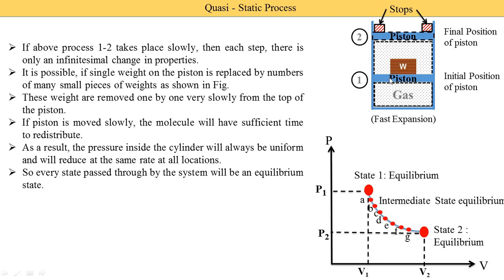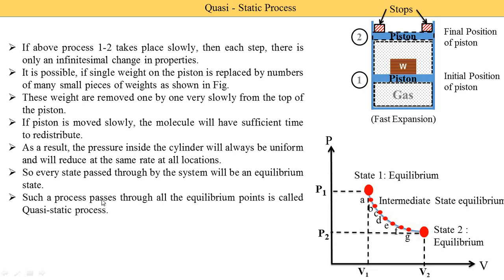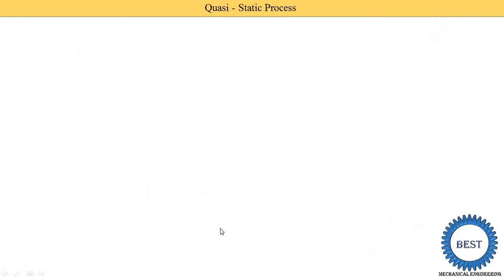So after removing A we get state A. Then after removing weight B we get point B. Similarly we proceed removing the weights one by one and get the complete process. Such a process that passes through all equilibrium points is called the quasi-static process. Here you see that all states are in equilibrium condition — that is why this process 1 to 2 is called the quasi-static process.